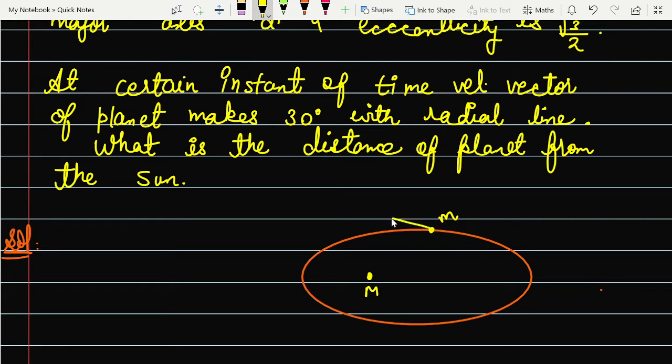At this instant, the velocity vector is in this particular direction. At this instant it is time t equals to t. So this is the angle you are making with this radial direction. This angle is given to you as 30 degrees. So you always visualize the situation. The distance from the sun, that is r, you have to find out here.